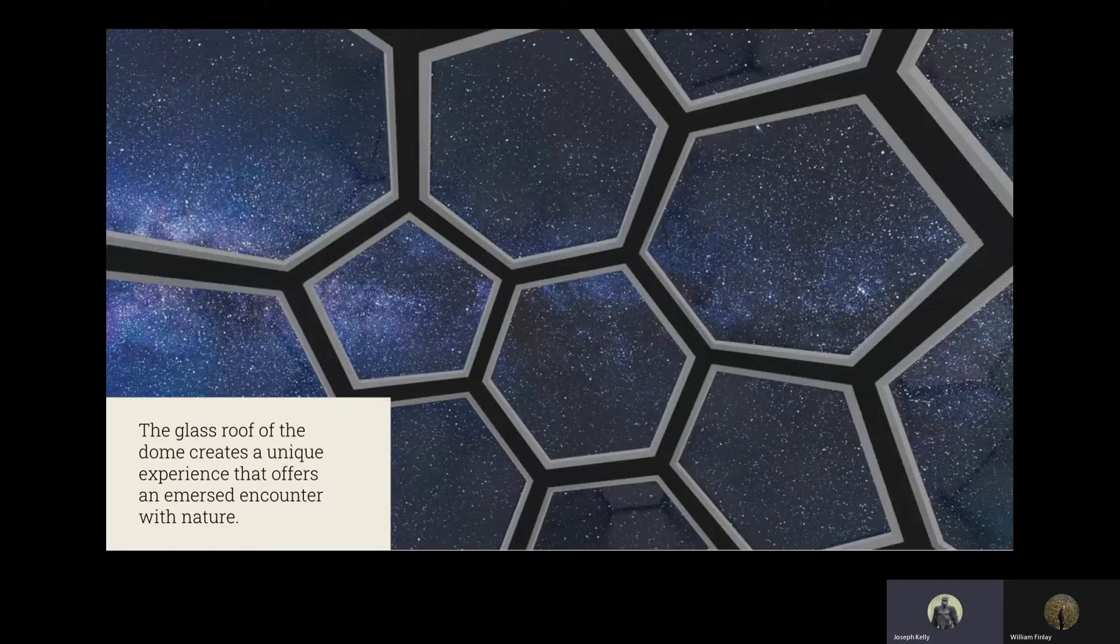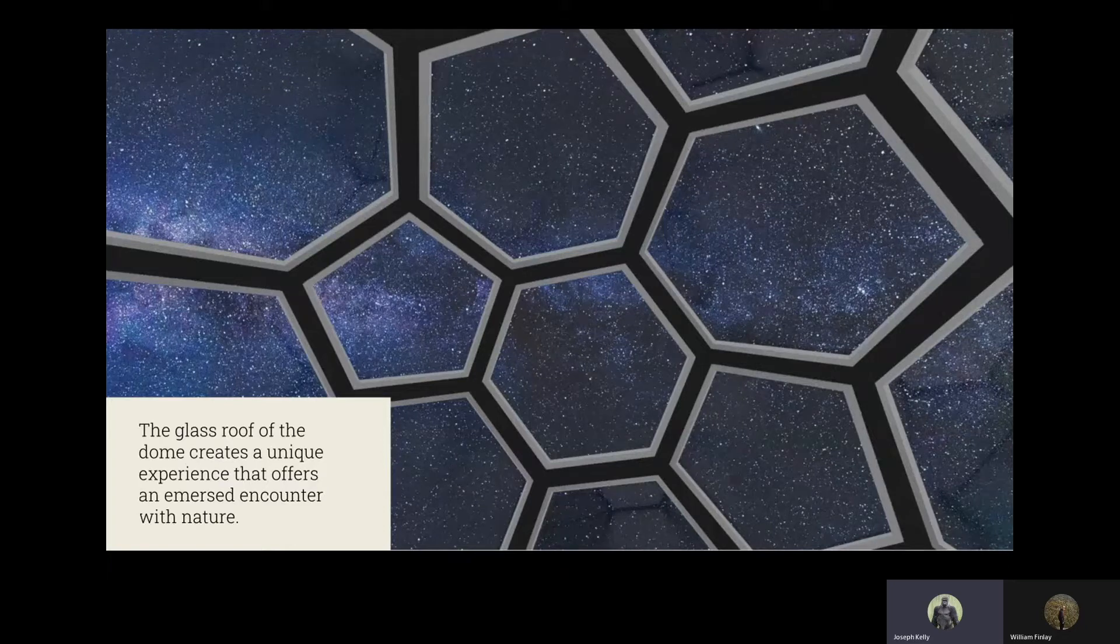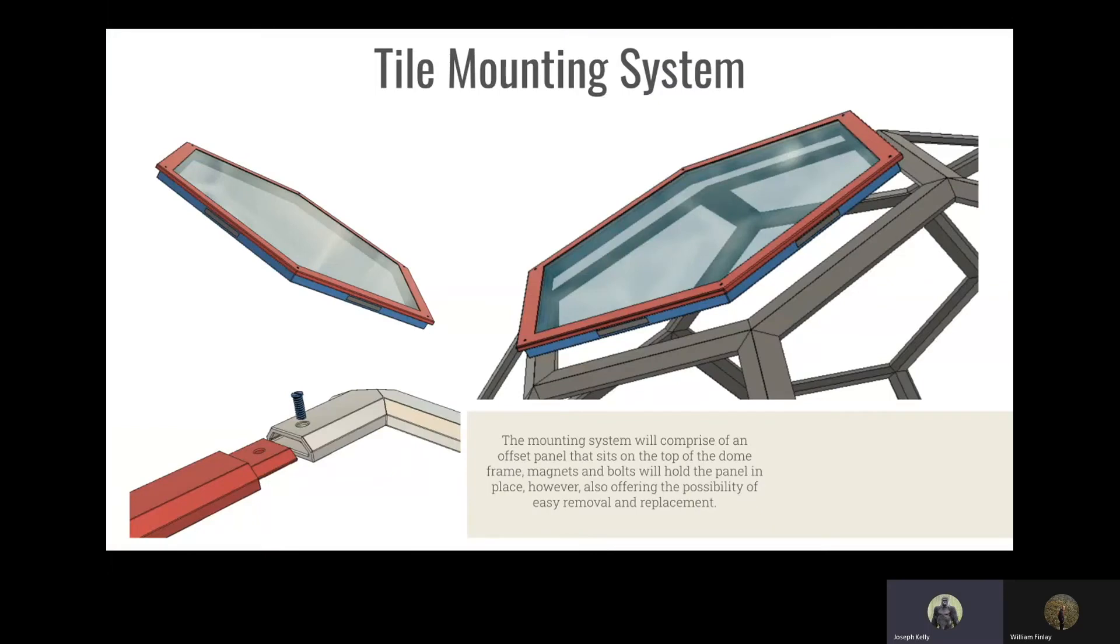The glass roof of the dome creates a unique experience that offers an immersed encounter with nature. The mounting system will comprise of an offset panel that sits on the top of the dome frame. Magnets and bolts will hold the panels in place, however, also offering the possibility of easy removal and replacement.